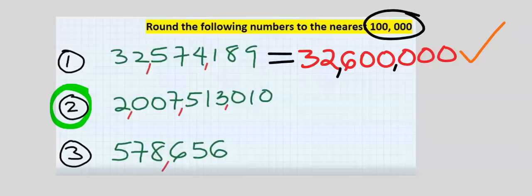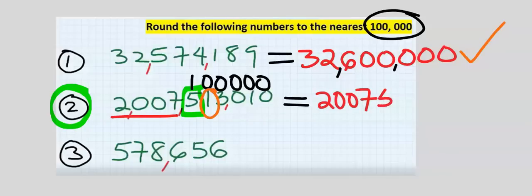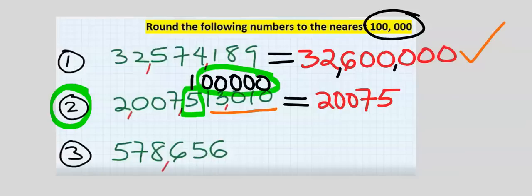To the nearest hundred thousand, the place value becomes zero zero zero zero zero. This is the hundred thousand place and it falls on five. Two zero zero seven remain unchanged. One cannot modify five, hence five will return, giving us one three zero one zero. We acquire these zeros and this becomes our answer.